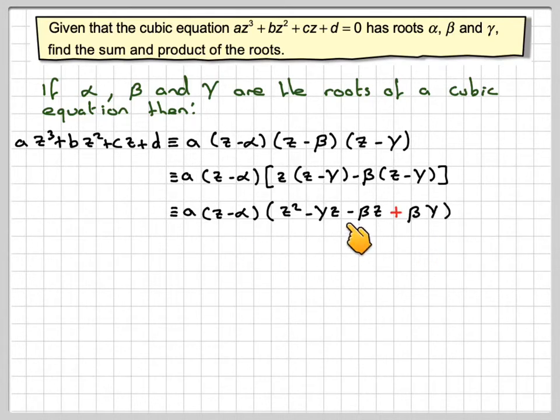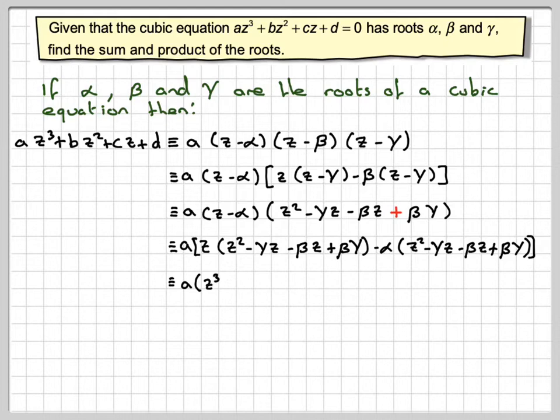And now we're going to expand these two brackets here. So az times z² minus gamma z minus beta z plus beta gamma minus alpha times that bracket again. Leaving the a at the front, we multiply through, we're going to get z³ minus gamma z² minus beta z².